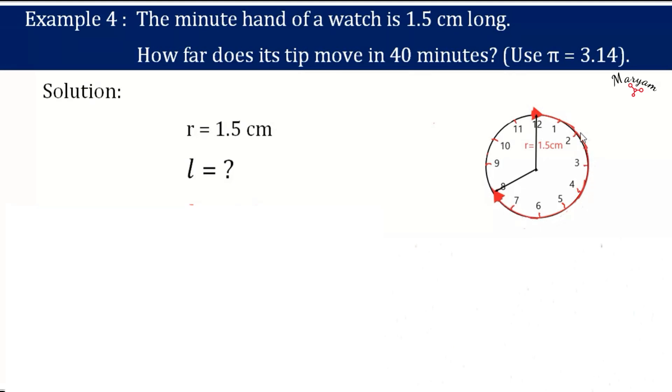So we have a relation theta equals l by r. As we want to find the arc length here, we can also write this relation as l equals r into theta.